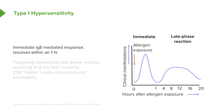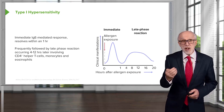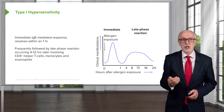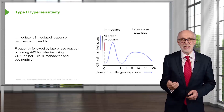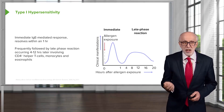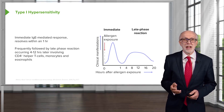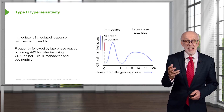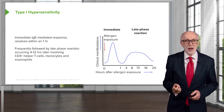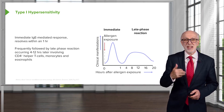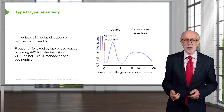In type 1 hypersensitivity there's an immediate IgE response, but this resolves within around about an hour. However, it is frequently followed by what is referred to as the late phase reaction, which occurs around 4 to 12 hours later. This involves CD4-positive helper T cells, monocytes, and eosinophils becoming activated.